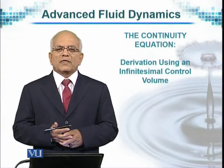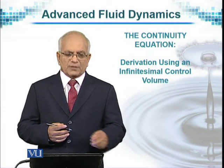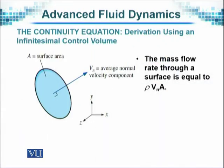Continuing with our derivation of the continuity equation, we see that if A represents the surface area and Vₙ is the average normal velocity component perpendicular to the surface where fluid is moving, then the mass flow rate through the surface equals ρVₙA, where ρ is density.